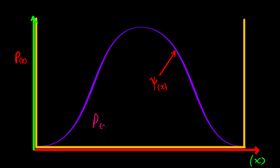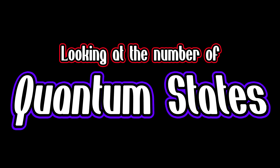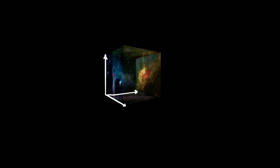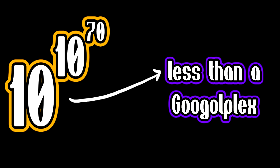From quantum mechanics, we know that every particle has an associated quantum wave, which describes the probability of what could exist at a specific point in space-time. If we look at the number of possibilities — or quantum states — that can occupy a space of one meter cubed, approximately the volume of a person, we find that to be about 10 to the 10 to the 70.